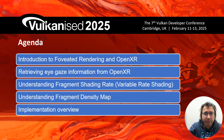Let's look at the agenda. We are going to first talk about what foveated rendering is and how OpenXR applications are made. We're going to talk about how to retrieve eye gaze information from an OpenXR API. Then we will understand how fragment shading rate, also known as variable rate shading, works in Vulkan. Then we will talk about the fragment density map extension, which is core to implementing foveated rendering, and then we will look at the implementation — specifically implementing static foveated rendering as well as dynamic foveated rendering.